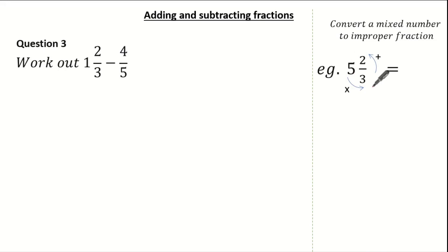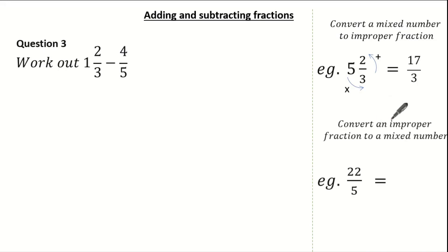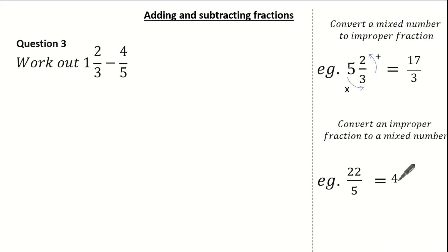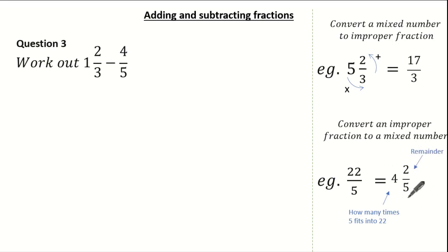So 5 times 3 is 15, add the 2 is 17, and it's still over the denominator of 3 — that's my improper fraction. Now let's convert an improper fraction into a mixed number — it's the opposite of what we've just done. So how many 5s go into 22? It's 4. And what's left over? 5 times 4 is 20, so 22 subtract 20 gives me a remainder of 2 over 5. The 4 is basically how many times the denominator fits into the numerator, the 2 was the remainder, and the denominator stays the same.